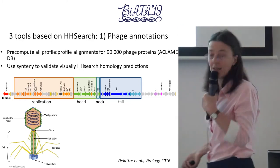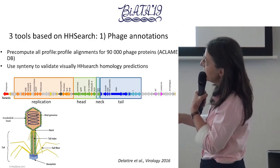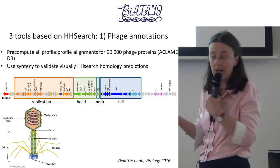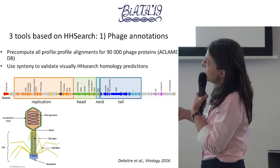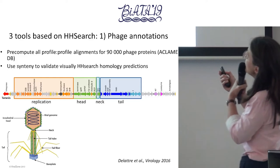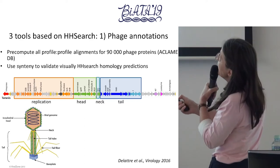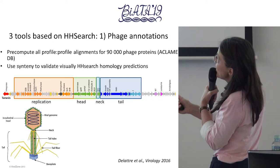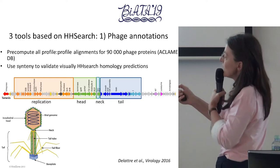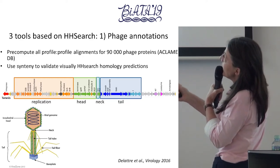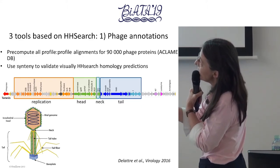A phage is made of a head, a neck, and a tail. Most phages of bacteria have a tail. You have DNA inside the head and then the tail fibers. Very often, genes are organized by functional modules — all the genes for the head are together, neck genes are next to head genes, then the tail genes. I've tried to use the same color code throughout: green for the head, blue for the tail, and so on. In another region of the genome you have all the genes involved in DNA replication.